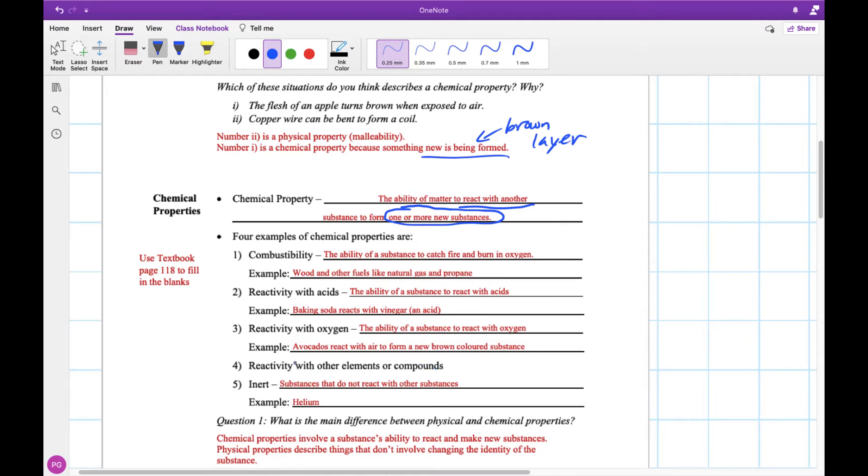Reactivity with other elements or compounds. Really the key here is the reaction, and that's what we had in our definition. We're looking for a reaction that creates something new. There's also a chemical property called being inert, so that's something that does not react with other substances. Helium is a great example of this. Helium, even though it's a gas, doesn't burn, doesn't react with acids, doesn't really do any reactions with anything. It just kind of hangs around. And that's something that we would call inert.